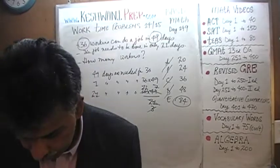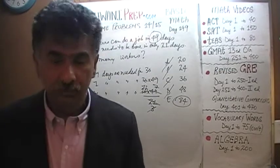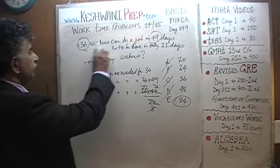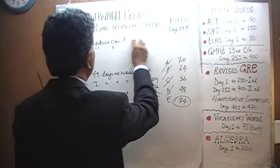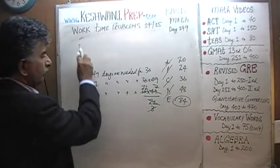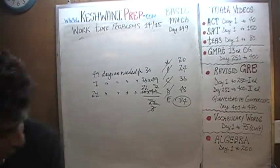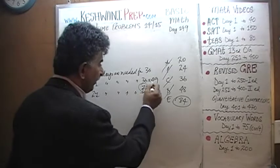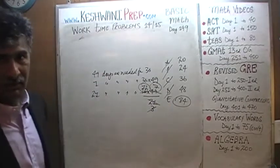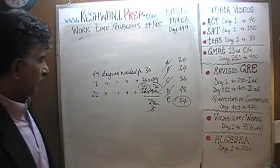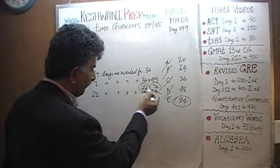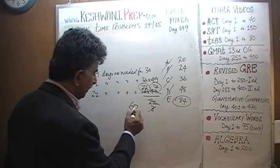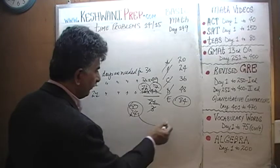So that was the more academic way. I didn't bother to compute 12 times 7 directly — it has to be 84 because that's the only answer choice left. But just to confirm: 12 times 5 is 60, and another 24 makes 84.